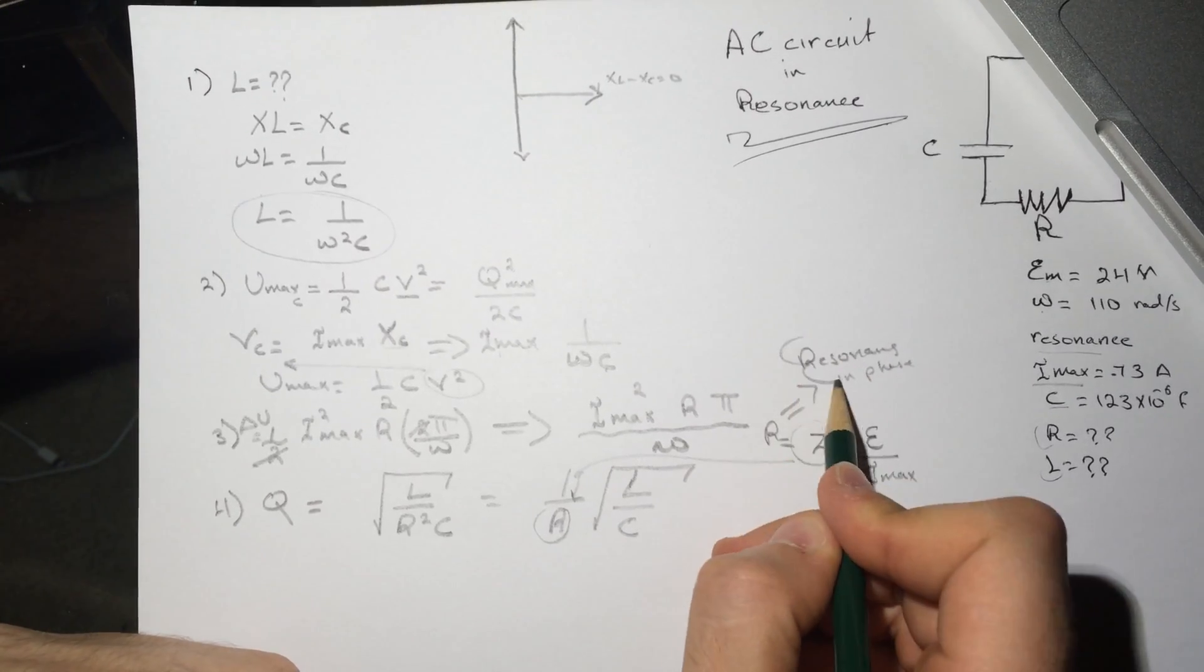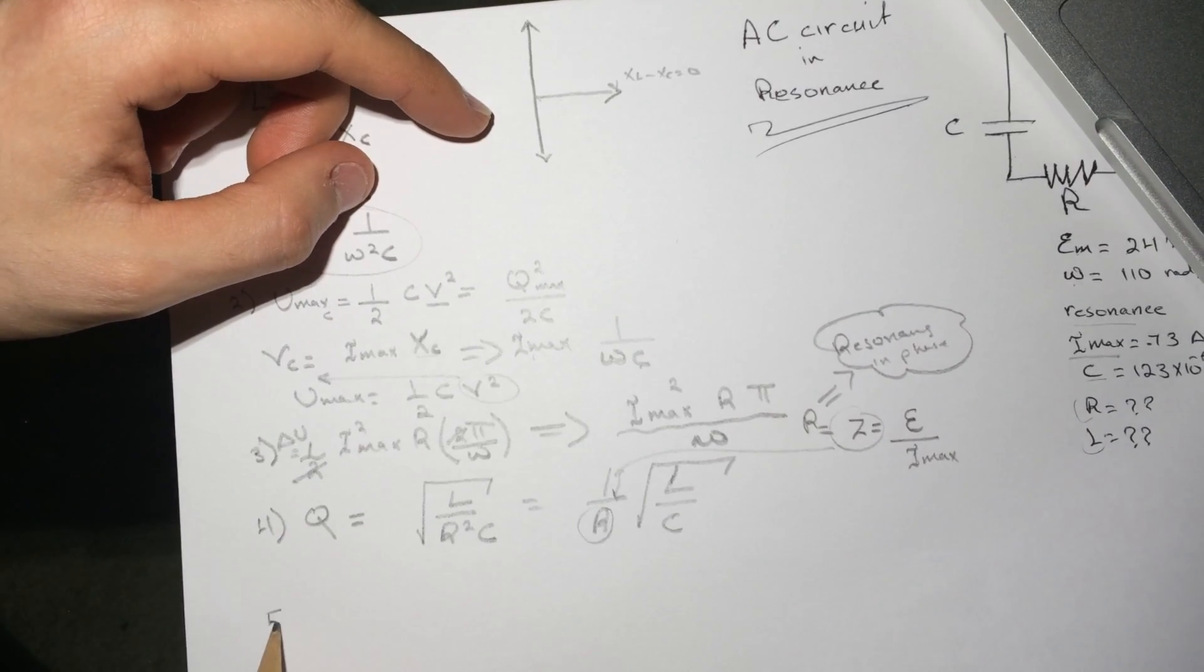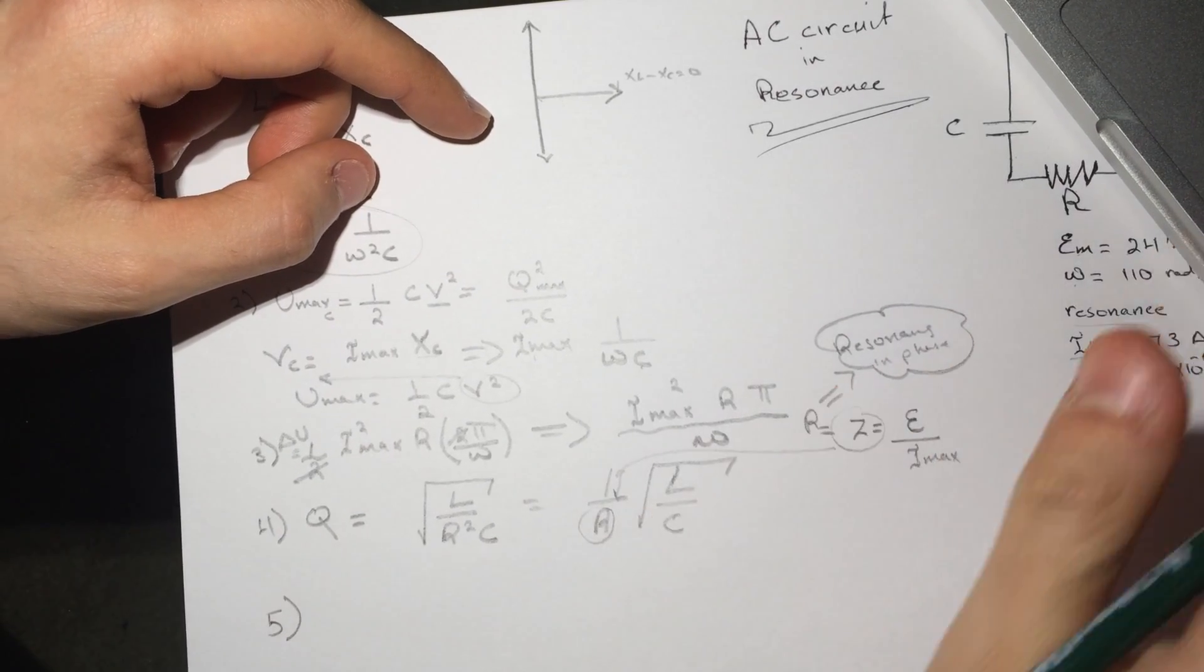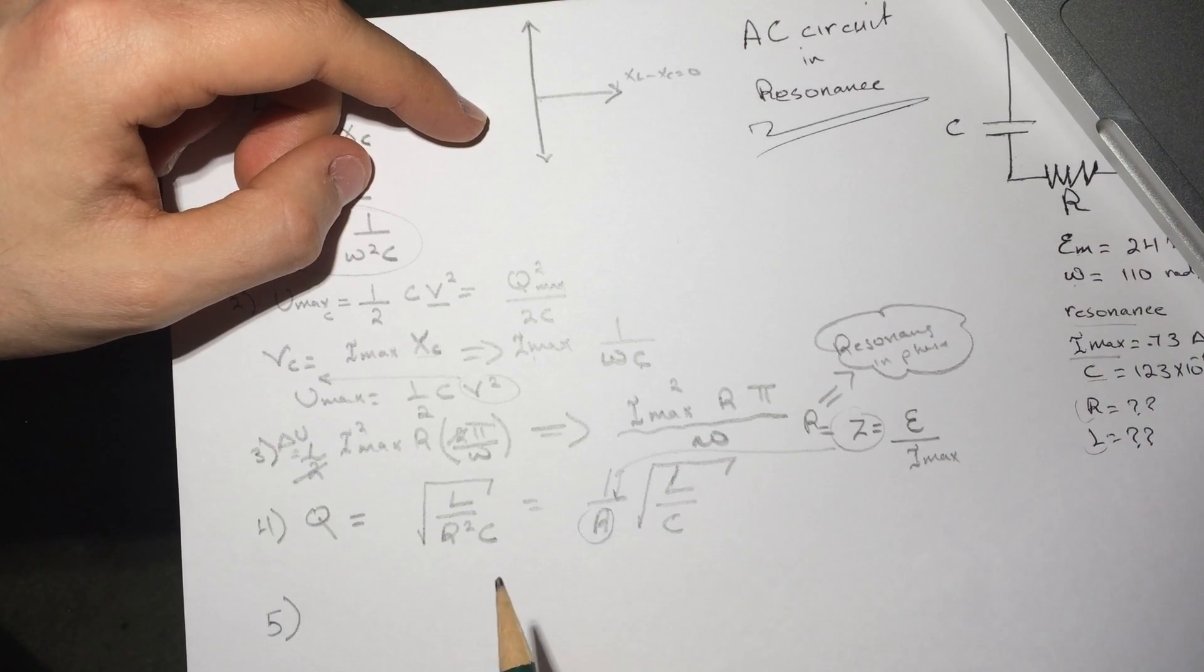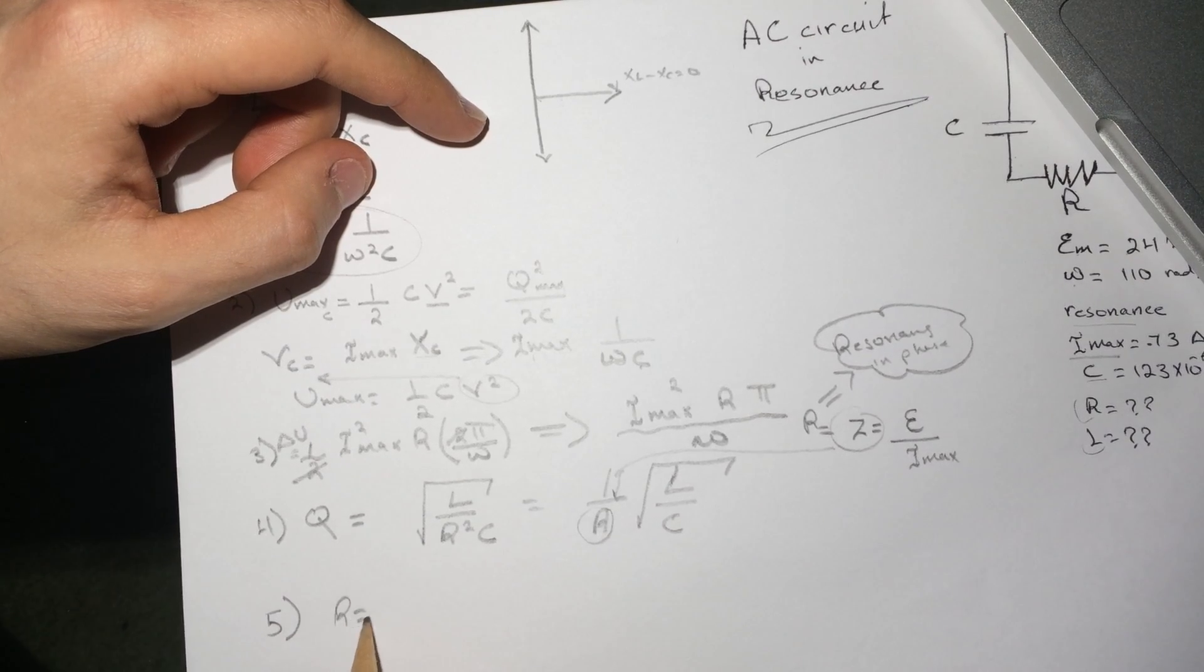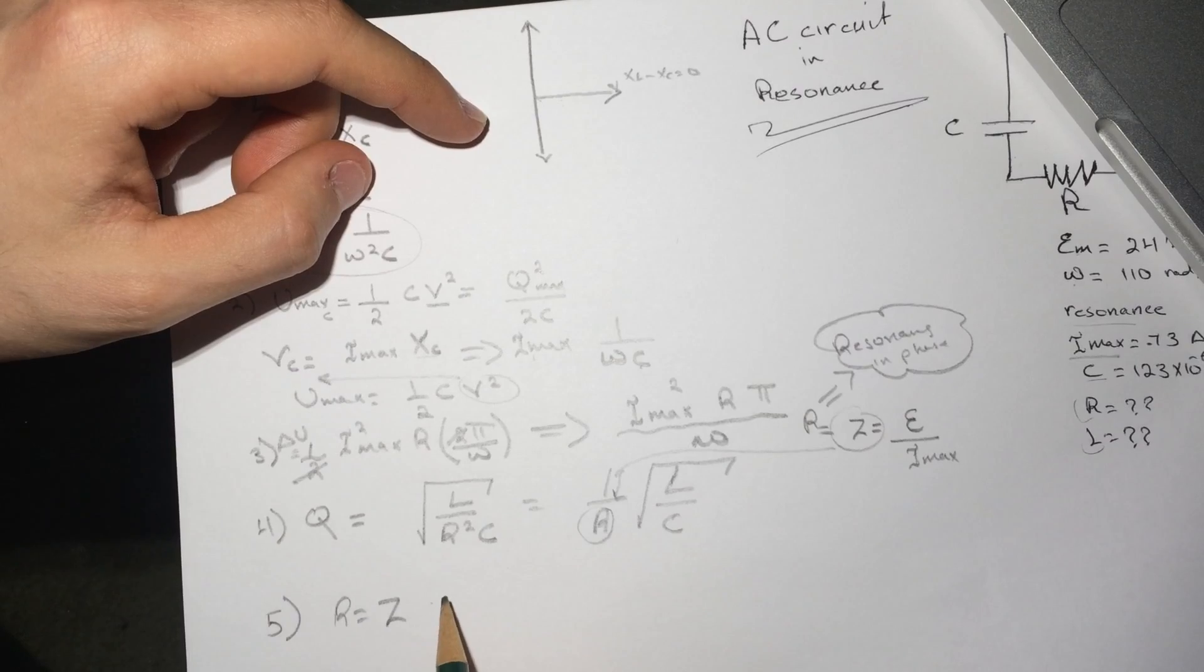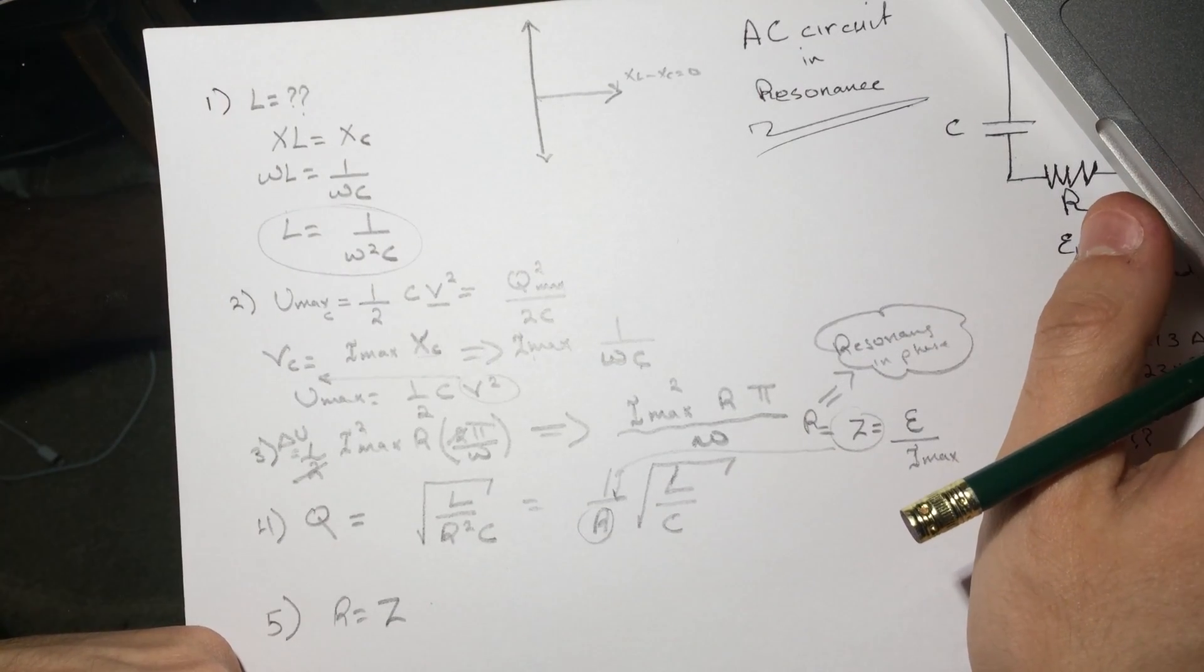Number five is asking what is R, the value of the resistance of the circuit. We just said that R is equal to Z in resonance, so I put the same value. Let me give you some numbers so you can be on the same track.